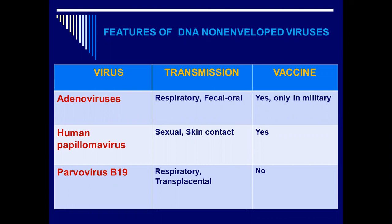We have three viruses in this group: the adenovirus, the human papillomavirus, and the parvovirus B19. The adenovirus is transmitted through the respiratory tract, the fecal-oral route, and also through direct contact. There is a vaccine, but it has been designed only for military purposes — no civilian use. The human papillomavirus is transmitted sexually and through skin contact and does have a vaccine. Parvovirus B19 is transmitted through the respiratory tract and through placental transmission and also has a vaccine.